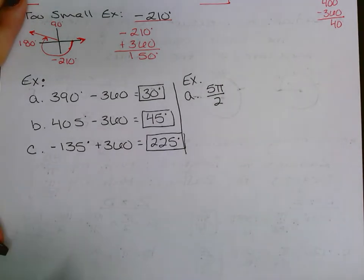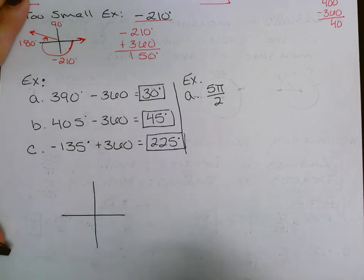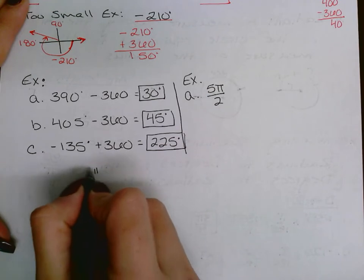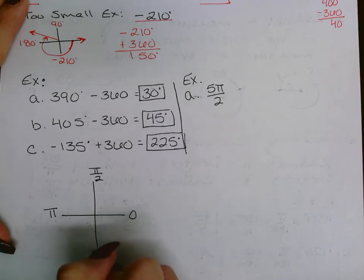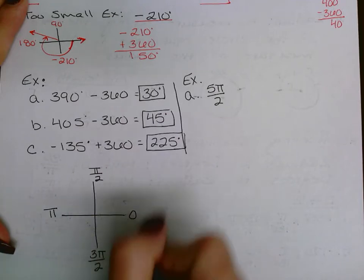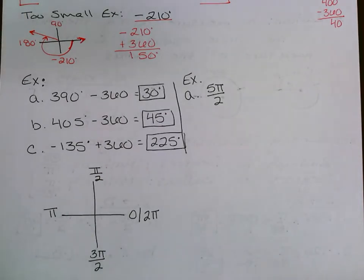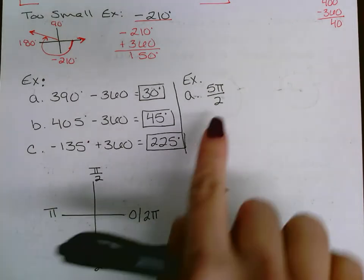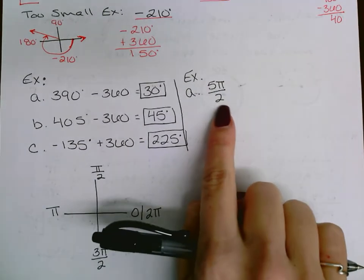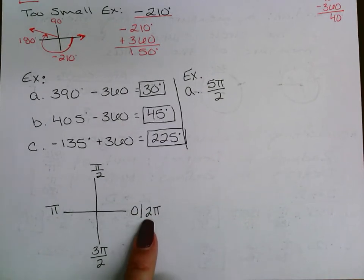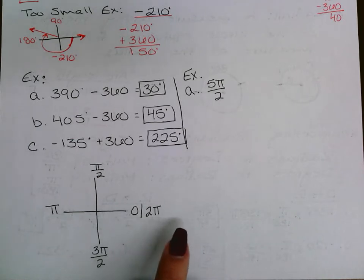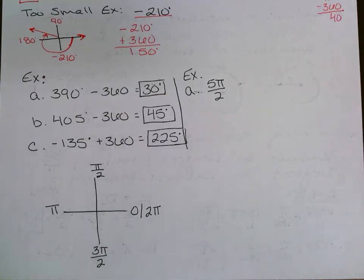On the unit circle, the radian landmarks are: 0, pi over 2 (a half pi), 1 whole pi, 3 pi over 2 (a pi and a half), and 2 whole pi. The question you're asking is: ignoring the pi, does this fraction surpass 2? For 5 over 2 — that's 2.5, which is past 2. So it's past 2 pi, and you need to subtract.